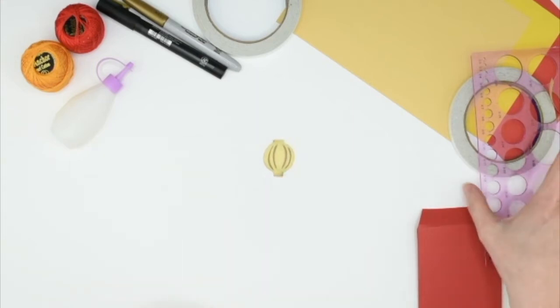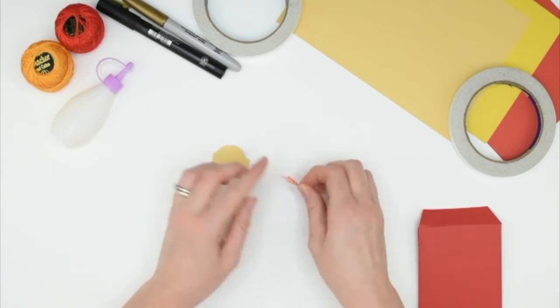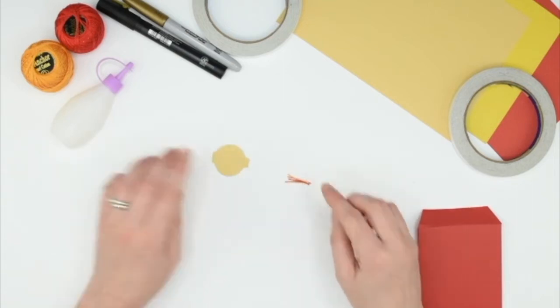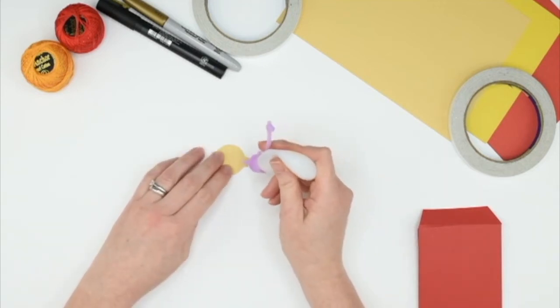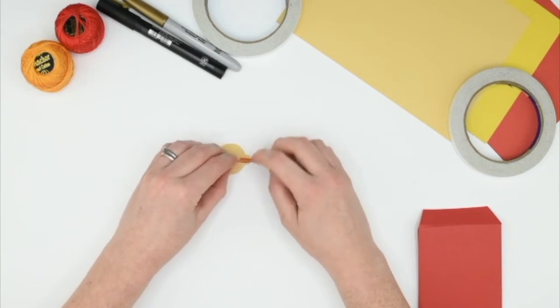We're now going to add some tassels to our lantern, so just turn that over. From the pieces of thread I've cut six pieces about two and a half centimeters long. Taking our PVA glue, pop a little bit of glue on the bottom here and then add our threads in place.